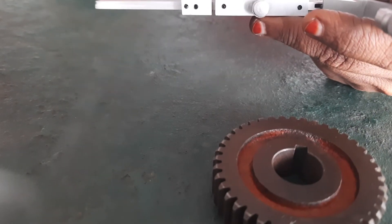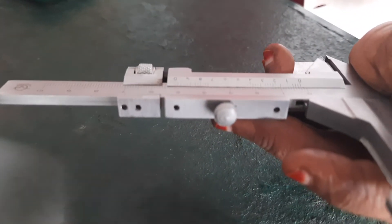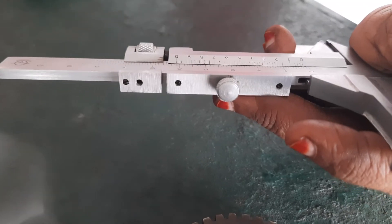A gear tooth vernier is widely used to measure tooth thickness, as the tooth thickness varies from top to bottom. Any instrument to measure a single tooth must measure the tooth thickness at a specified position.